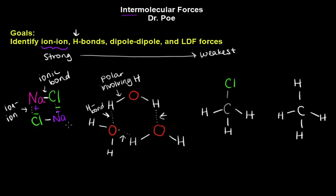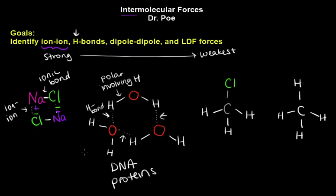Having these intermolecular forces — ion-ion being the strongest, H-bonds the next strongest — and having all of them throughout your body matters. We also see hydrogen bonds in DNA and in proteins, making these molecules extremely stable, but we can still unzip them in DNA in order to perform replication.